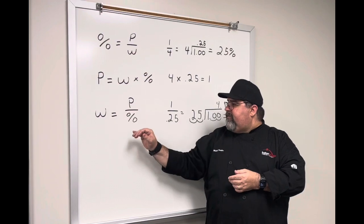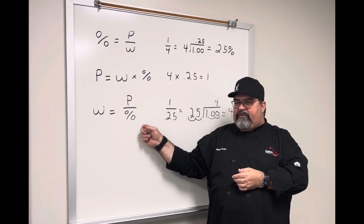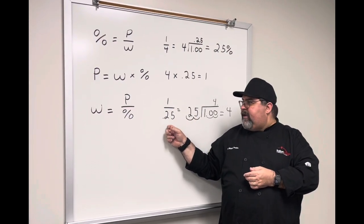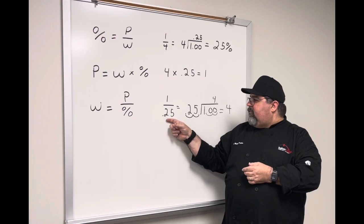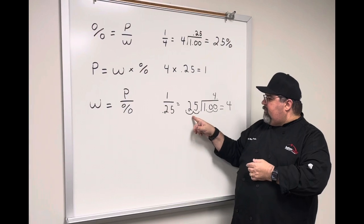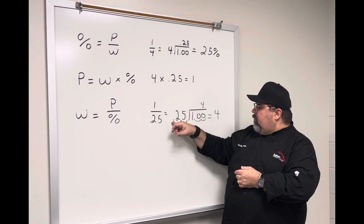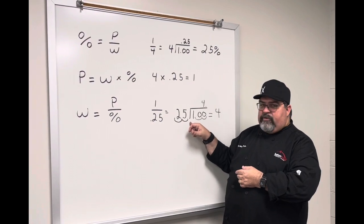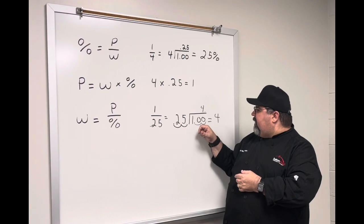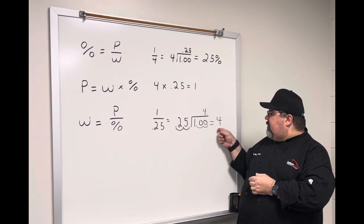If we know the part and the percent, we do part over percent. We're going to do 1 over .25. So 1 divided by .25 in long division format. We move the decimal place over two places on both sides, so 25 into 100 goes 4 times. Our answer is 4.